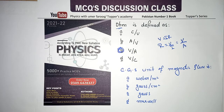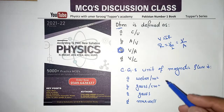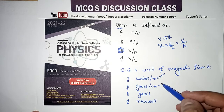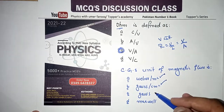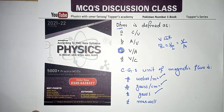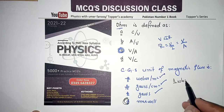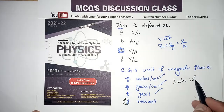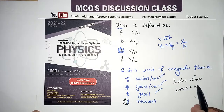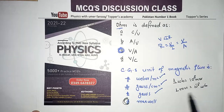CGS unit of magnetic flux: weber per meter square, gauss per centimeter square, gauss, or maxwell? Weber per meter square, gauss per centimeter square, and gauss are all units of magnetic induction, not magnetic flux. The correct option is maxwell. One weber equals 10 to the power 8 maxwell, or one maxwell equals 10 to the power minus 8 weber. Maxwell is the CGS unit of magnetic flux.